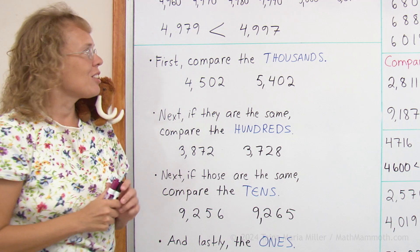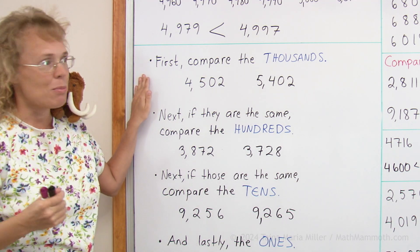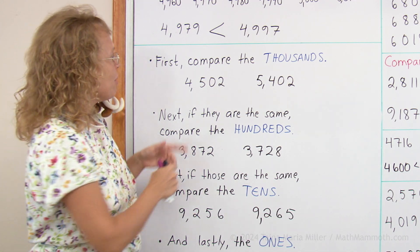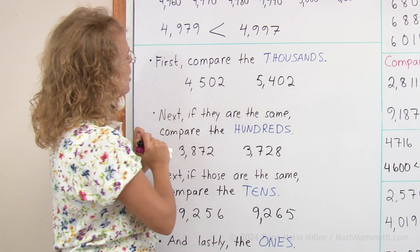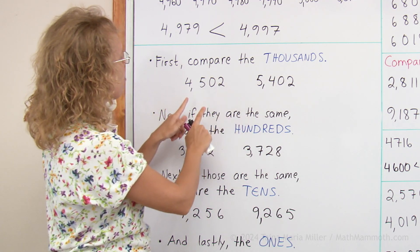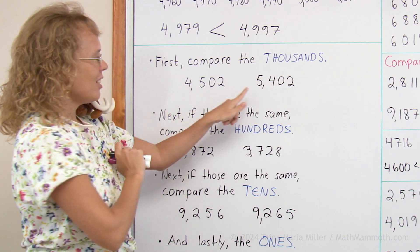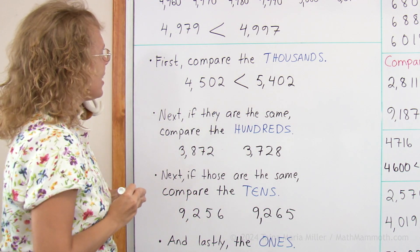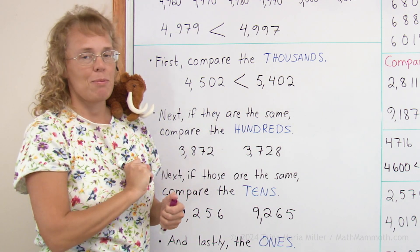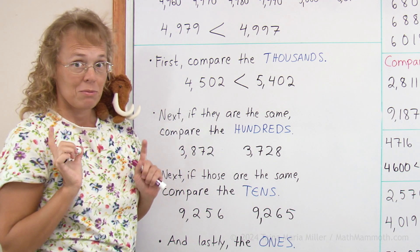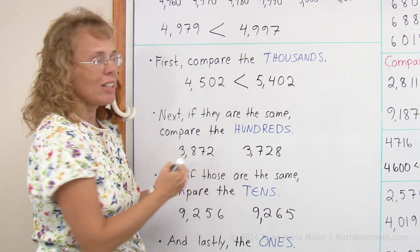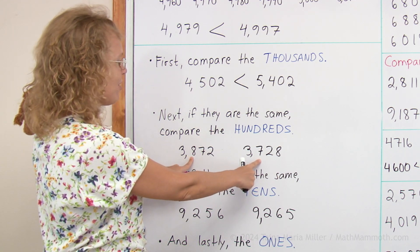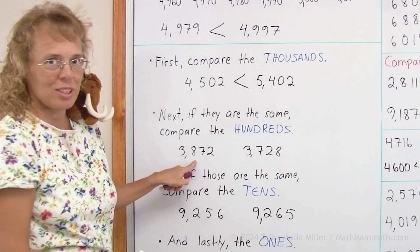When we're comparing numbers, we first compare starting with the biggest place value unit, which for these numbers would be the thousands. So these two numbers — I compare four thousand here, five thousand here. So this one is more. And then if the thousands are the same, then I compare the hundreds. For example, in these two numbers, both of them have three thousand, so then I'll go to the hundreds digits — eight hundred versus seven hundred. So this number is now the greater number.